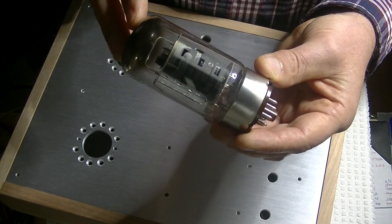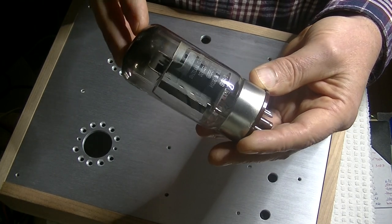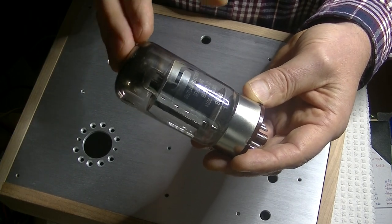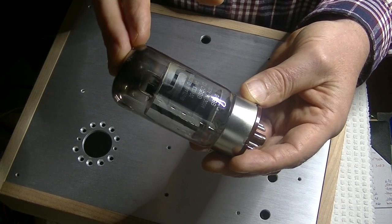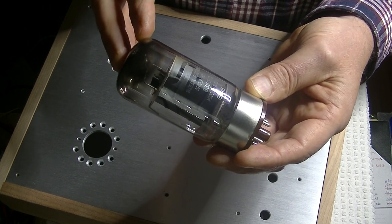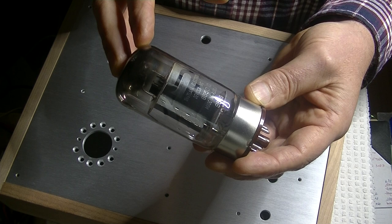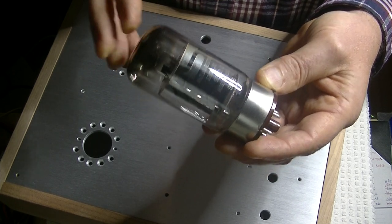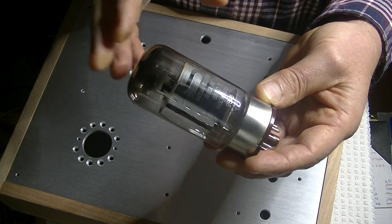And the exception is, and the only one I've ever found, is this wonderful Svetlana. The Svet 6550Cs have, they're sort of a crossover tube. They have good bass, they have wonderful drive, and they have a warmer mid-range than is normal for the type. Not as warm as an EL34, but warmer.